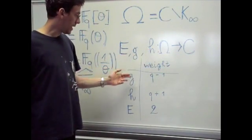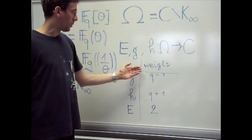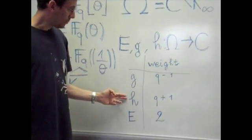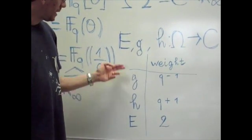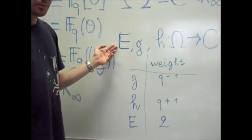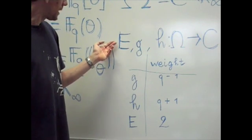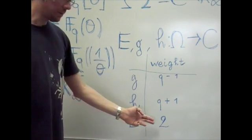In fact, G and H are Drinfeld modular forms of weights Q-1 and Q-1 respectively. E is not a modular form but has functional properties and we can associate to E the weight 2.